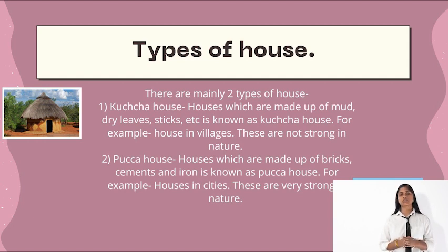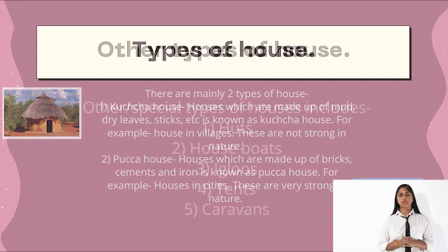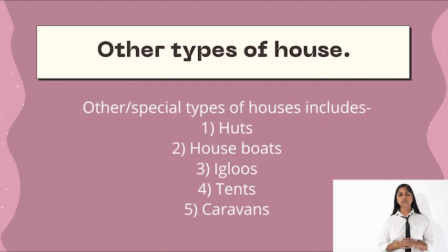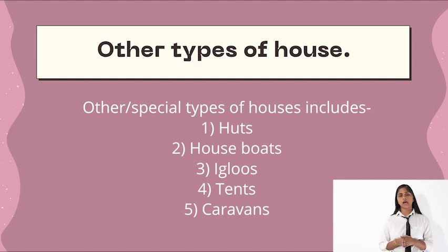The second type is the pakka house. Houses which are made up of bricks, cement, and iron are known as pakka houses. For example, houses found in cities. These are very strong in nature.